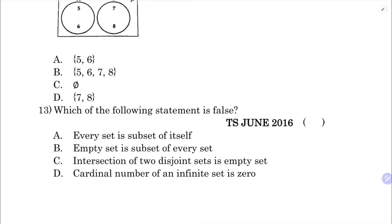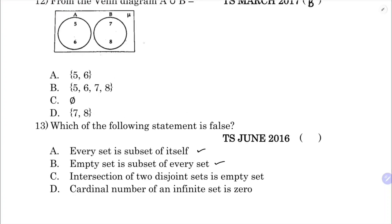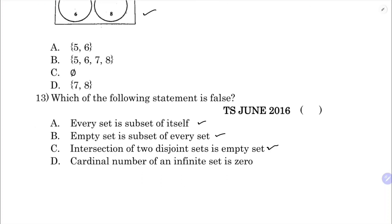Question: which statement is false? 'Every set is a subset of itself' - correct. 'Every empty set is a subset of every set' - correct. 'Intersection of two disjoint sets is empty set' - correct. 'The cardinal number of an infinite set is 0' - this is false, because cardinal number 0 means null set, not infinite set. Natural numbers are infinite with no cardinal number of 0. So the correct option is D.